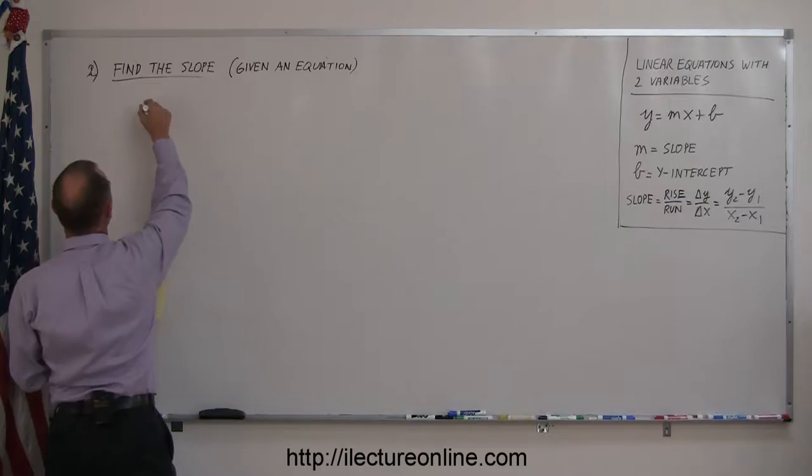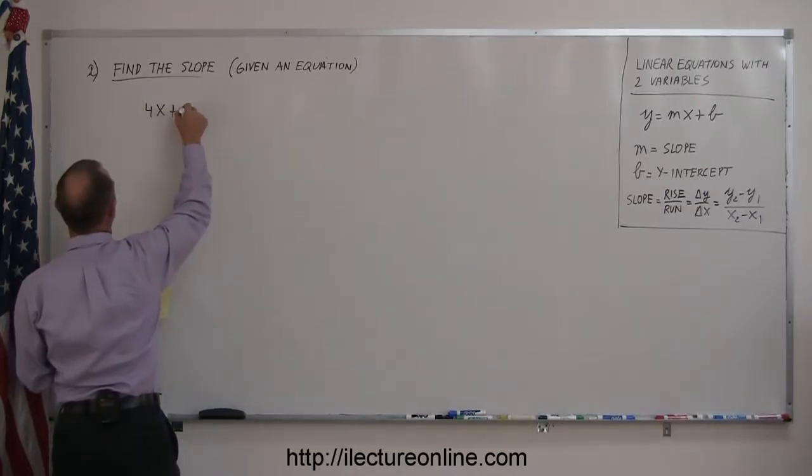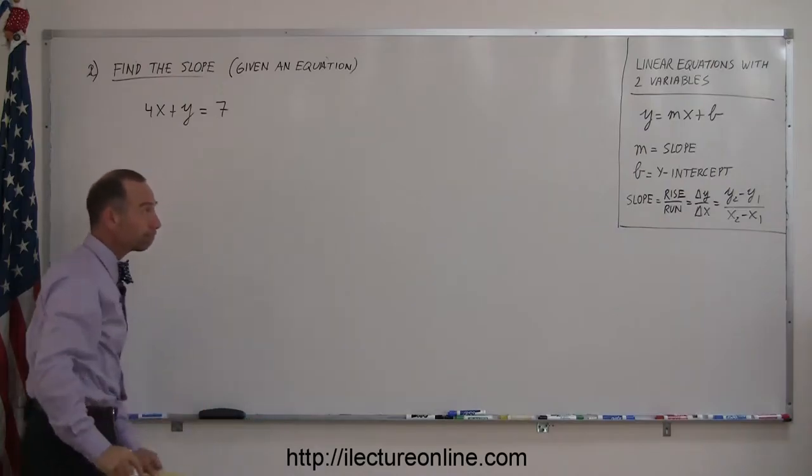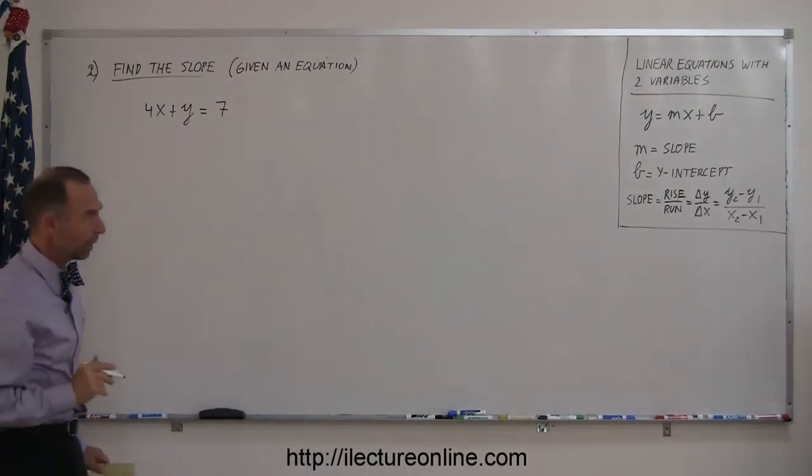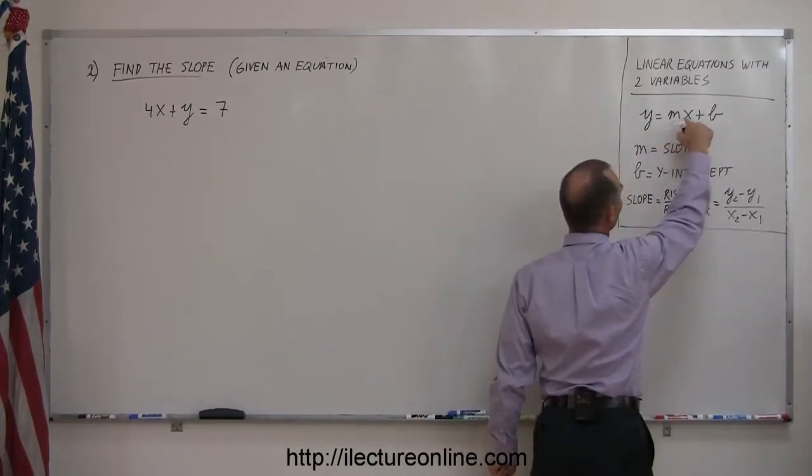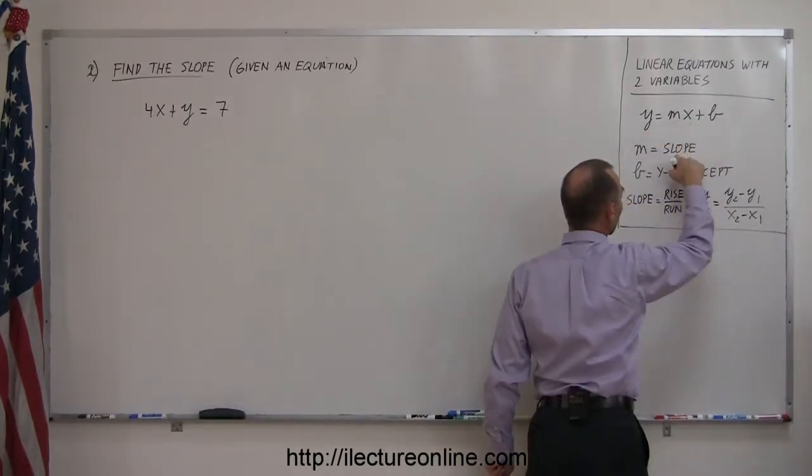Well, let's put the equation down. We have 4x plus y equals 7. All right, you're supposed to find the slope. Now, realizing that this is the general format of a linear equation, and the number in front of the x is equal to the slope,